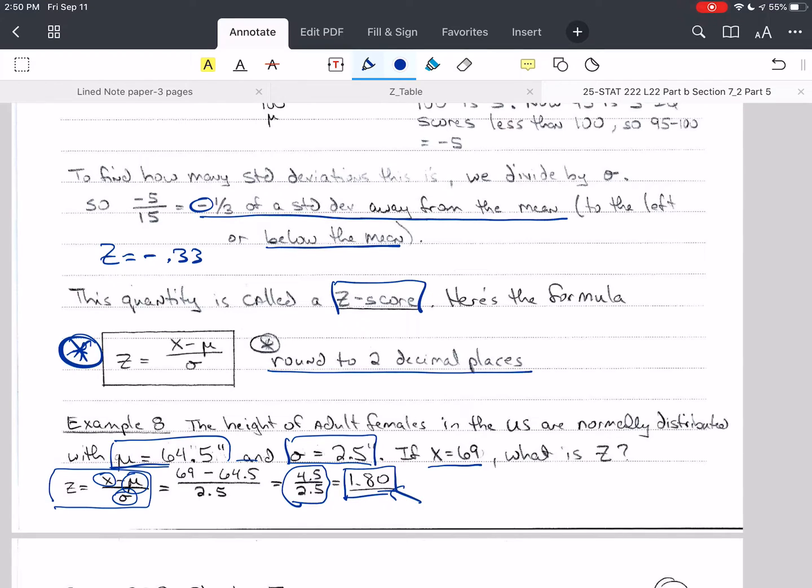The z-score is positive 1.80, so that tells us that this is 1.8 standard deviations above the mean. If this is 64, this is 69 in x, then in z, 64 corresponds to our mean, which is 0, and then z would be 1.80 here. And so this 69 and this 1.80 correspond to the same probabilities.